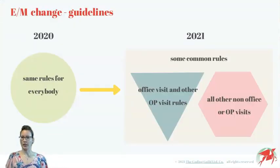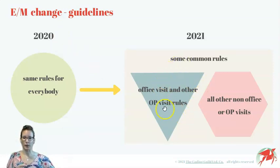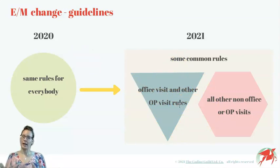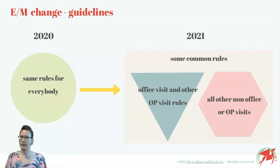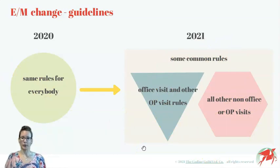The gist of the changes for this year is that while in 2020 we applied the same rules for all EM services with regards to leveling and the usage of time, from 2021 the office and other outpatient visits codes are singled out and given their own rules. Due to this change, a lot of concepts had to be redefined by the AMA, which caused kind of a schism in the guidelines. From 2021 we have 3 sets of rules. One for all EM services — these are common rules applicable to all EM codes, such as the concept of new and established patients.